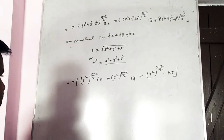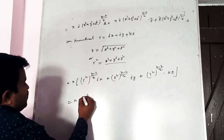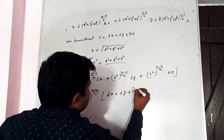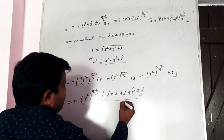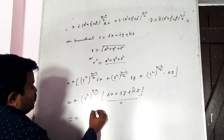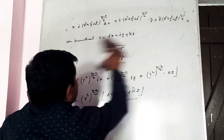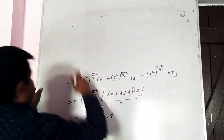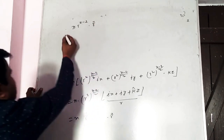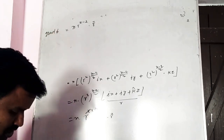Taking r^(n−2) as common value: n·r^(n−2)·(ix + jy + kz) = n·r^(n−2)·r⃗. Here we have grad φ = grad(r^n) = n·r^(n−2)·r⃗. That is the answer.